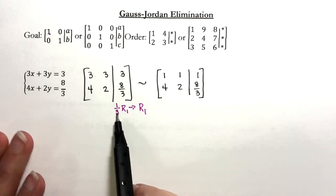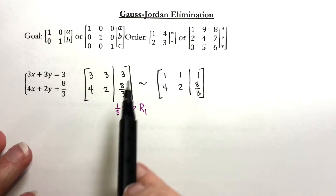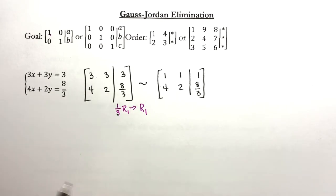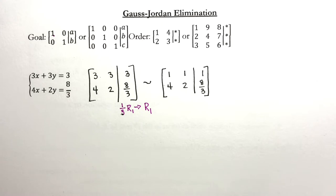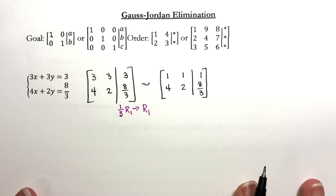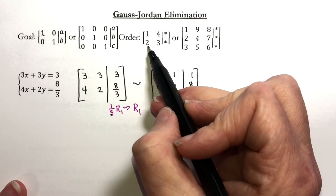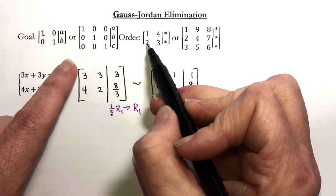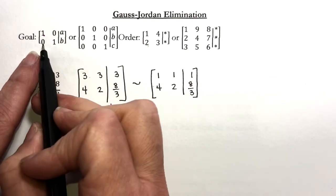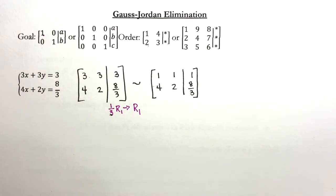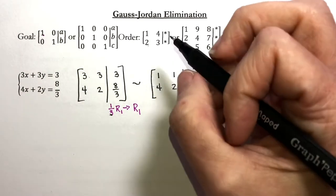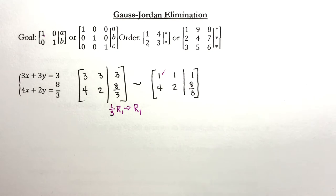So I multiplied by one third. This is really the same as dividing everything here by three. So what's the next thing I need to do? My second step is I need a zero right here. So I have my one in the correct position. Now the thing I'm trying to change is this four.